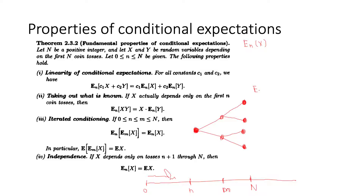Let me list the probabilities for the horizon nodes. For the top node we need head-head, so that's P tilde squared. Then head-tail gives P tilde times Q tilde. Tail-head also gives Q tilde times P tilde. And tail-tail gives Q tilde squared. So those are the weights that E_n of X applies to the final nodes.